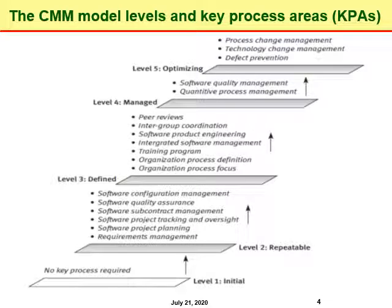Here we see the key process areas related to any specific level. To achieve a particular level, organizations need to work on these process areas to improve their processes. For example, to achieve level 2, which is repeatable, there are several key process areas that need to be worked on, such as requirements management, software project planning, software project tracking and oversight, and so on.